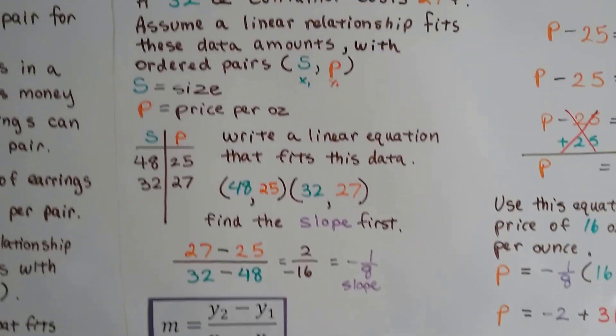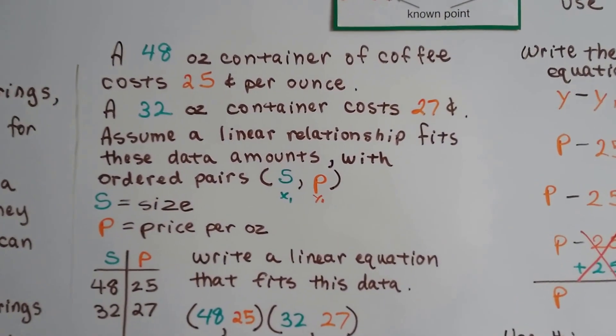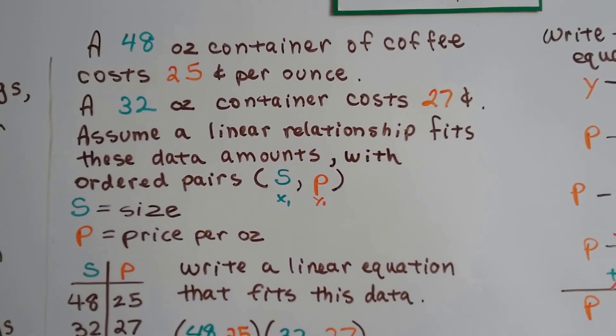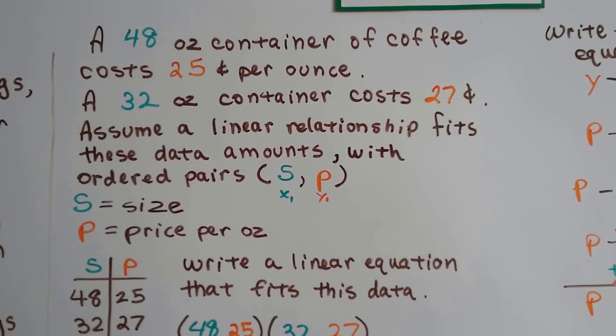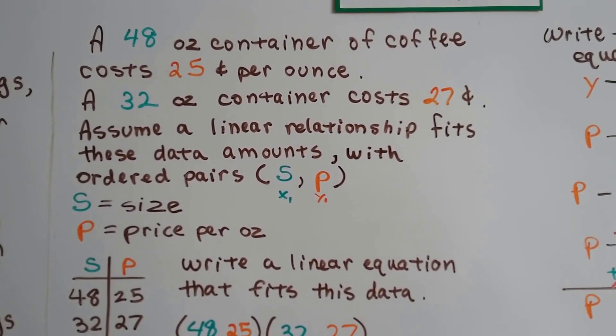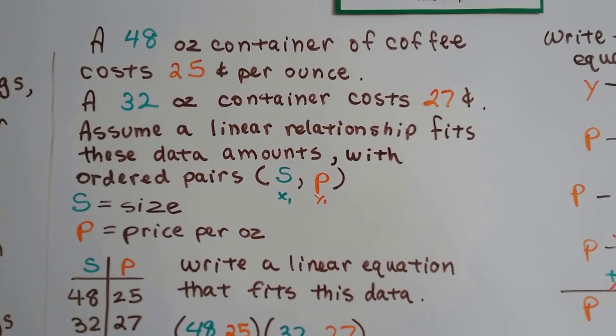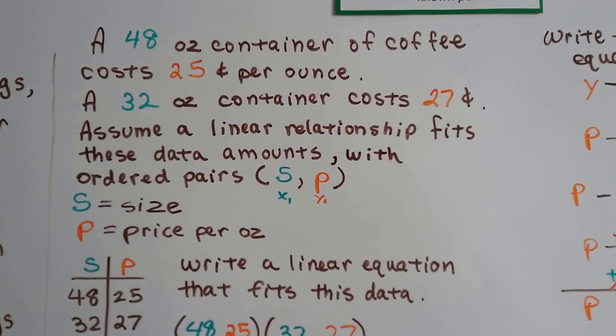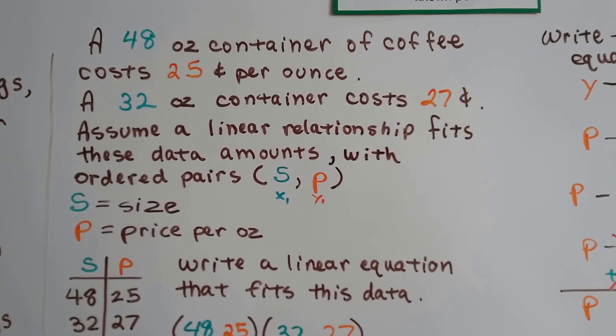Alright, so now let's take a look at coffee. We've got a 48-ounce container of coffee costs 25 cents per ounce. And a 32-ounce container, a smaller container, costs 27 cents per ounce. The price went up per ounce by 2 cents, didn't it? Now, if we assume a linear relationship fits these data amounts, we can have ordered pairs S for X1 and P for Y1.